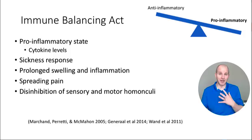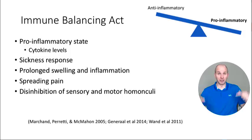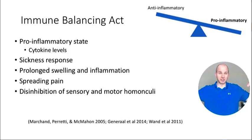Our immune system modulates that connectivity. That connectivity — or disconnectivity — is modulated by an immune system that determines it. Cells that should be disconnected to give your body a clear representation of a hand in space become connected, and all of a sudden this representation of a hand, a low back, a knee might become disinhibited or smudged or blurry in the nervous system.